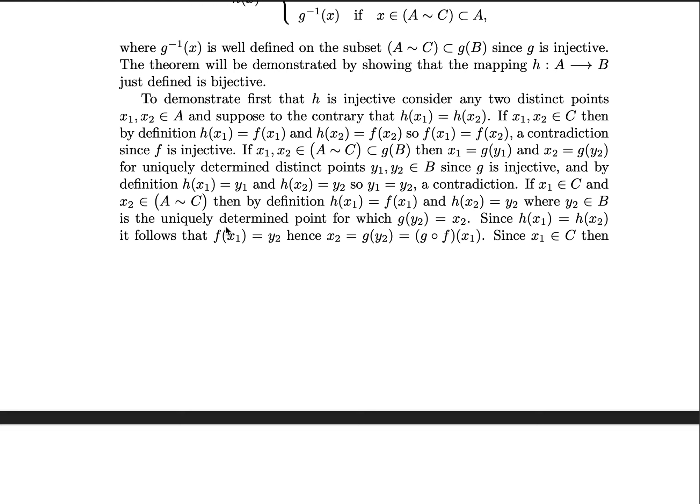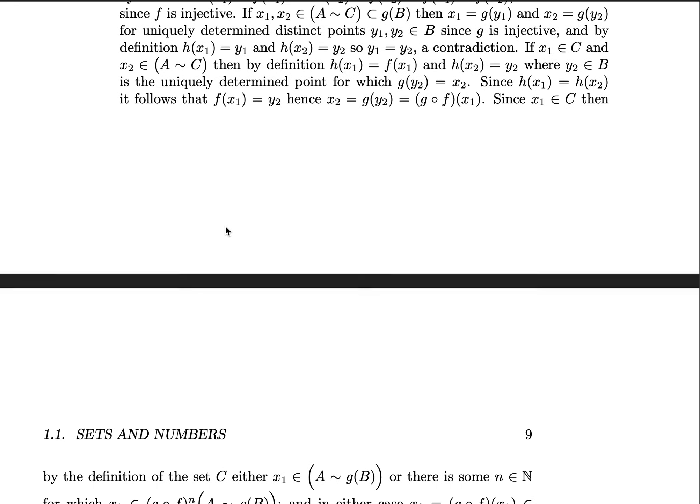h(x₂) is equal to y₂, where y₂ is some uniquely identified point in B defined by g(y₂) equals x₂. Since we're assuming that h(x₁) is equal to x₂, it follows that f(x₁) is equal to y₂, and hence x₂ is equal to g(y₂) is equal to g(f(x₁)). But since x₁ is in C,